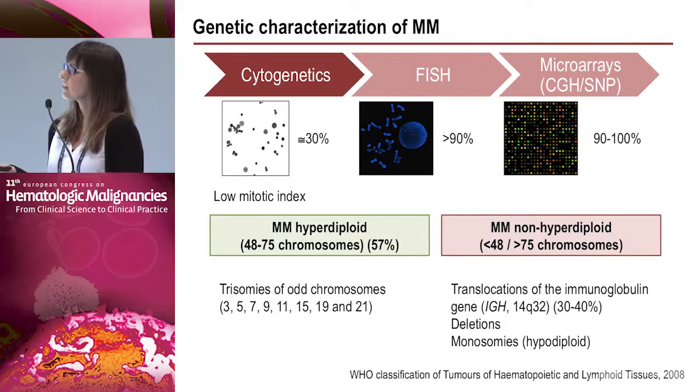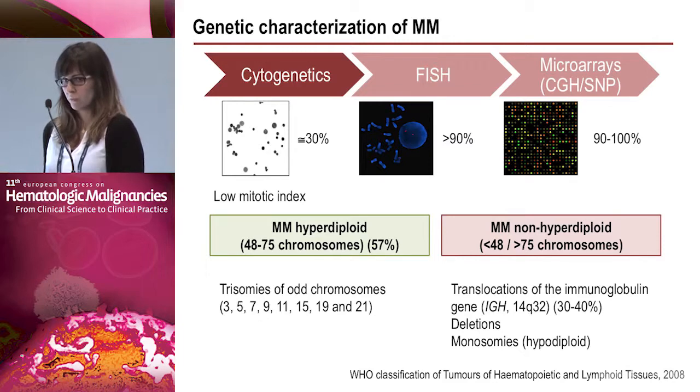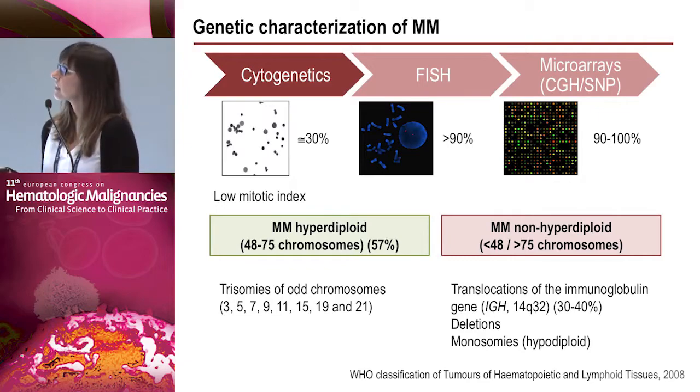For genetic characterization there are several techniques available. Conventional cytogenetics — the karyotype — is limited by a low mitotic index, giving useful information in only one-third of cases. FISH is the standard technique and can detect alterations in more than 90% of cases. Microarrays can also detect alterations in virtually all cases, with the main advantage of studying the entire genome at high resolution.